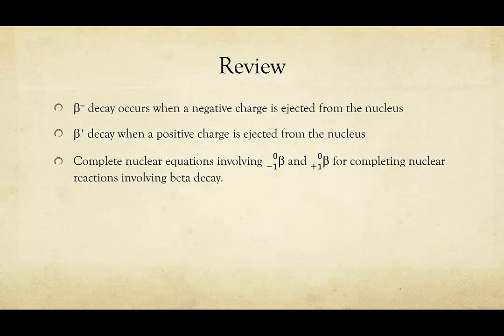So, in review, beta minus decay occurs when a negative charge is ejected from the nuclei. Overall, this makes the nuclei more positive. Beta plus decay is when a positive charge is ejected from the nucleus, overall making the nucleus less positive. And we've learned how to complete nuclear equations involving beta plus and beta minus for completing reactions involving beta decay. Remember that there are several ways to write this, and you have the option of whether you want to write the subscript and superscript. I would suggest writing it. It makes balancing the equations quicker and easier and less likely for mistakes.